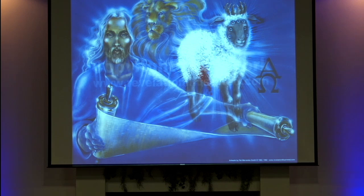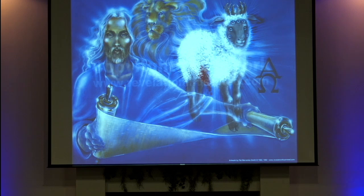He came and took the scroll out of the right hand of the one who sat on the throne. When he took it, the four living creatures and the 24 elders fell down before the Lamb. When John sees Jesus, he sees him as a Lamb who was slain — representing his earthly ministry. As John the Baptist said: 'Behold the Lamb of God who takes away the sin of the world.' But he's also the Lion of the tribe of Judah — fierce and irresistible. This time he comes representing the wrath of God.